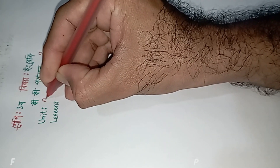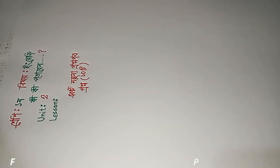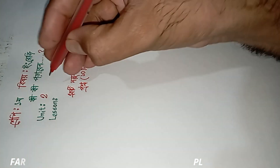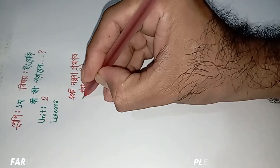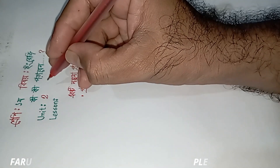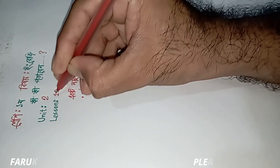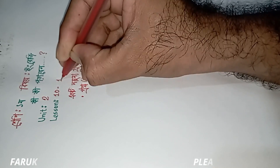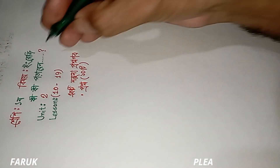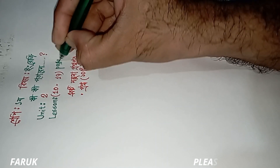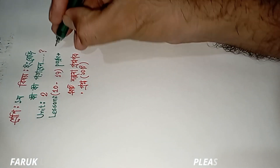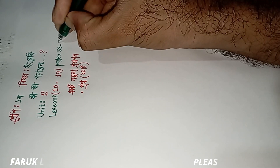We are able to see unit 2. So lesson 10 — we will start with lesson 10, page 33.